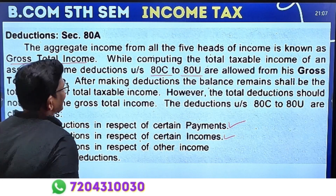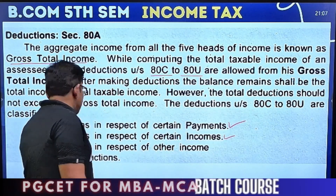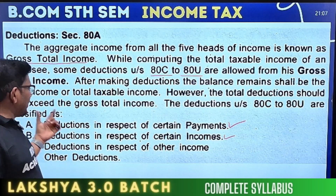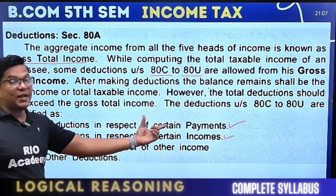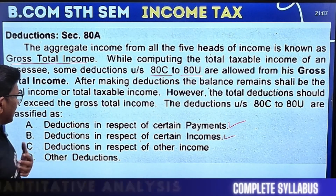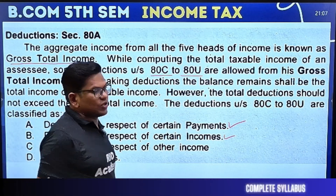The reductions under Section 80C to 80U are classified. The first category is deduction in respect of certain payments — for example, if you want to pay for insurance premium.